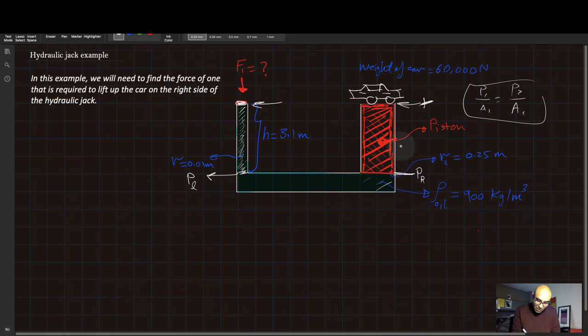So on the left side you can say that F1 over A1 plus the pressure coming from here, which is rho G H, must equal to the pressure here, which is P on the right, which is equal to F2 over A2. That's how you solve this one.